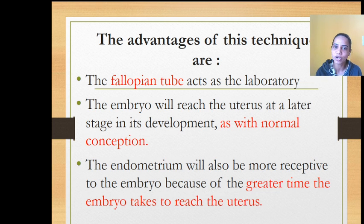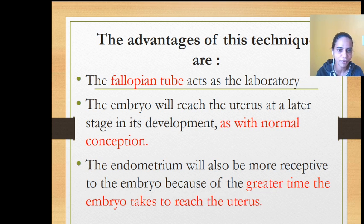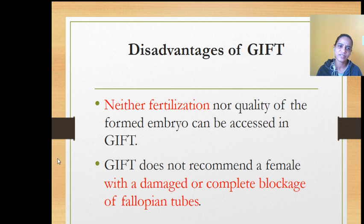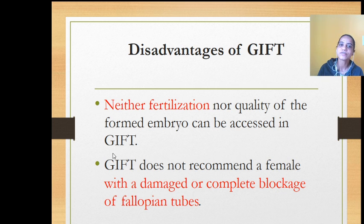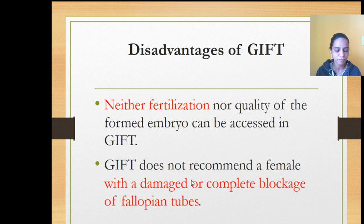The advantage of GIFT is that the fallopian tube acts as a laboratory — fertilization takes place inside the fallopian tube, making it similar to normal conception. The endometrium will also be more receptive since the blastocyst is produced inside the fallopian tube. The disadvantage is that there is no 100% certainty that fertilization will take place, and the quality of the embryo produced cannot be assessed through GIFT. Additionally, if the woman has damaged or completely blocked fallopian tubes, GIFT cannot be used.